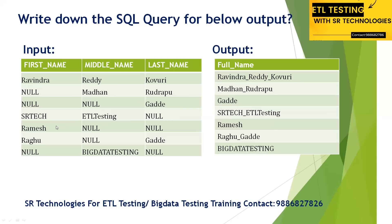For row five, since only first name 'Ramesh' is present and the rest are null, just output 'Ramesh.' For row six, 'Ragu' and the last name value are concatenated as 'Ragu_that,' ignoring the null middle name. For the last row, only middle name 'Big Data Testing' is present, so output that directly. So how are we going to write this query in SQL?